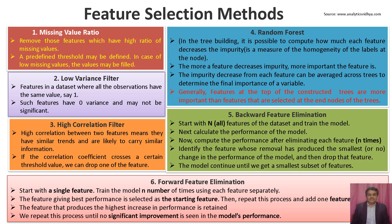The next method is backward feature elimination. We start with all N features of the dataset and train the model, then compute the performance of the model. Next, we compute the performance after eliminating each feature. This process repeats N times. We then identify the features whose removal produced a small or low change in model performance and drop those features. The model continues until we get a smaller subset of features.